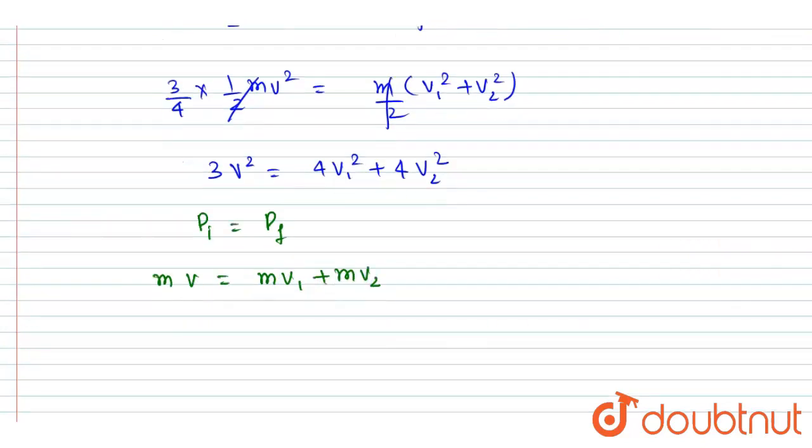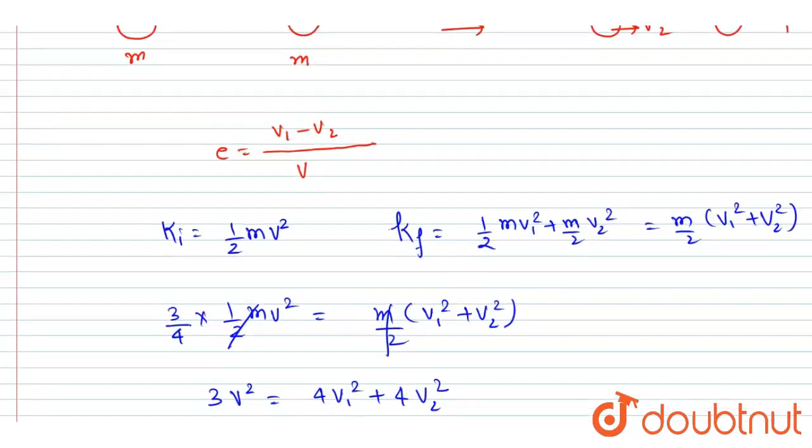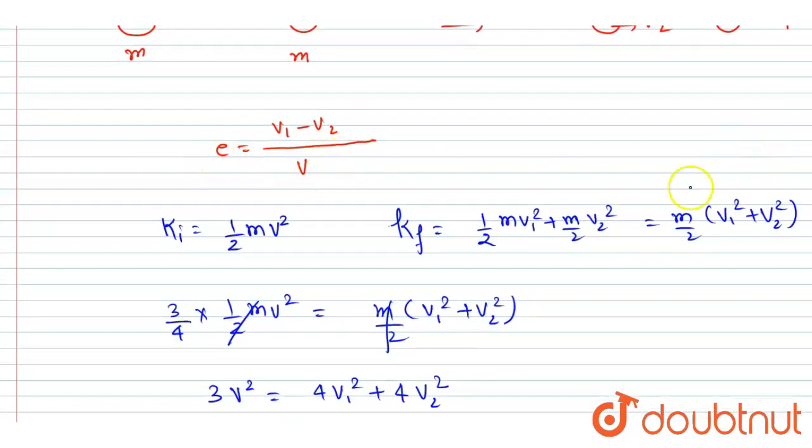That's it. So I will write v equals to v1 plus v2, very simple. So now if you see, we have the value of v1 minus v2 is equals to ev and v1 plus v2 from here. If you see here, v1 minus v2 is equals to ev.